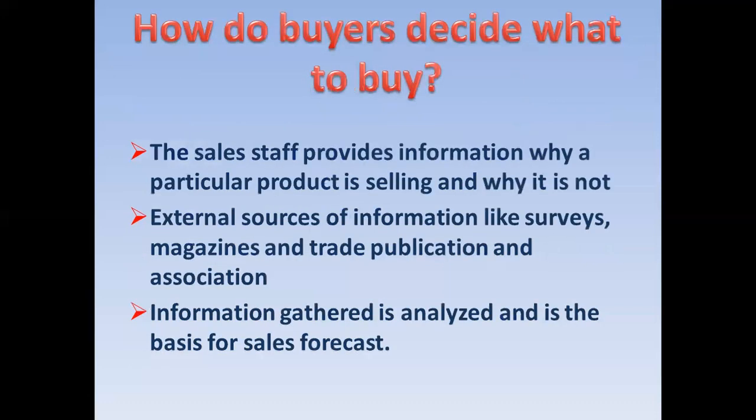We need to look into which areas of the country or state products are actually selling. This information can be obtained from a sales report. How do buyers decide what to buy? First, the sales staff will provide information about why a particular product is selling or not selling. You would also have information from external sources such as surveys, magazines, trade publications, and associations. This information, once gathered, has to be analyzed and it becomes the basis for a sales forecast.